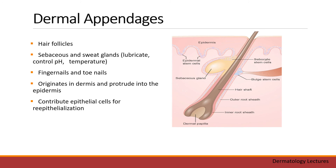Dermal appendages are another main structure of the dermis and consist of hair follicles, sebaceous and sweat glands, fingernails and toenails. These originate in the dermis and protrude into the epidermis, contributing epithelial cells for re-epithelialization.